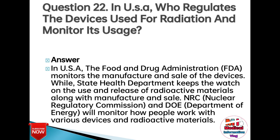Question 22: In the USA, who regulates the devices used for radiation and monitors their usage? Answer: The Food and Drug Administration monitors the manufacture and sale of devices. The State Health Department oversees the use and release of radioactive materials along with manufacture and sale. The NRC (Nuclear Regulatory Commission) and DOE (Department of Energy) monitor how people work with various devices and radioactive materials.